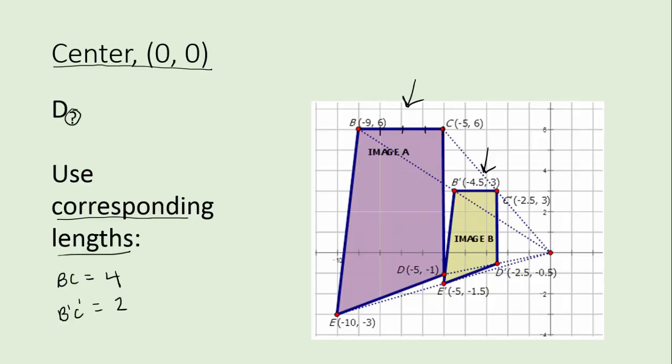The length of BC is one two three four and B prime C prime is only two. If you're not sure about that one observe this. We've got a half of a unit, a whole unit, and another half unit. So all together that makes two units.